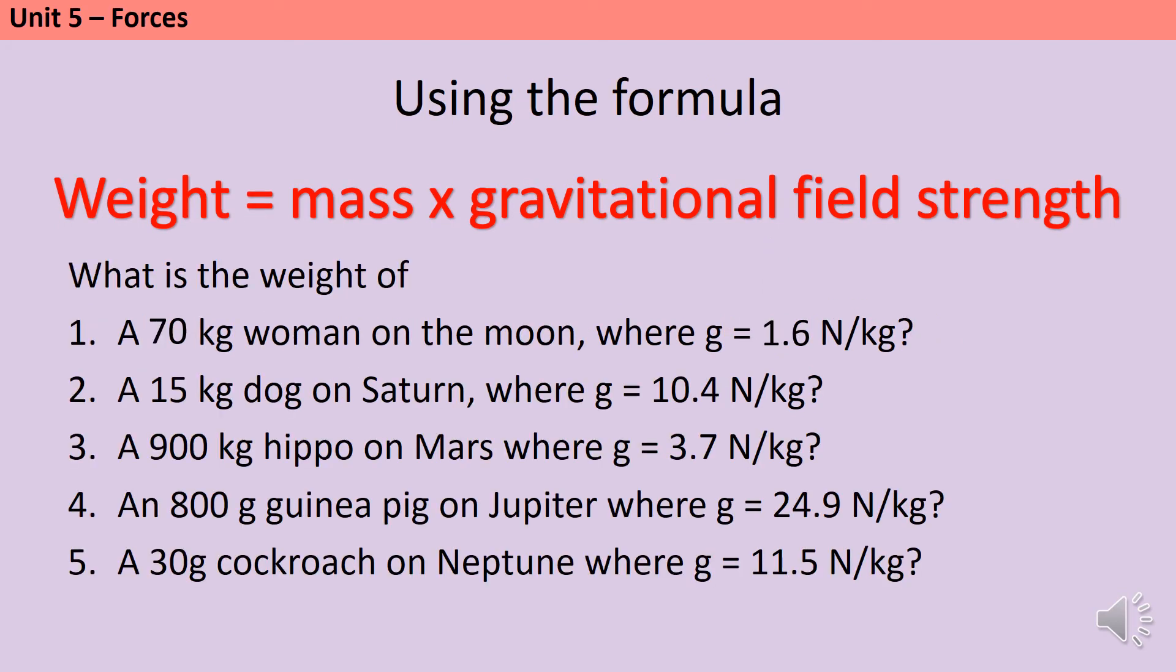My first step in doing any physics calculation is to use the units, the letters written after the numbers, to work out which quantity that number represents. So, the 70 in question 1 has kg written after it, kilograms, and I know that kilograms are the units for mass. So, I'm going to put that 70 where I've written mass in my equation. Then, the 1.6 says newtons per kilogram after it, and I know that those are the units for gravitational field strength. So, 1.6 goes where it says GFS. Now, I can see that weight is 70 multiplied by 1.6, and if I do that calculation, I find out that my answer is 112. We're talking about weight, which is a force, so the units are newtons. The next four questions are all the same type. So, pause the video and see if you can follow my example to come up with the answers.